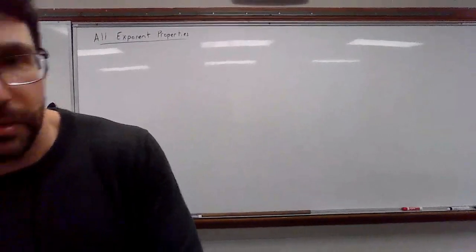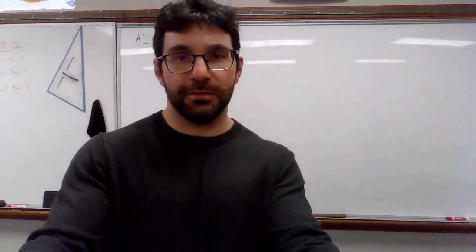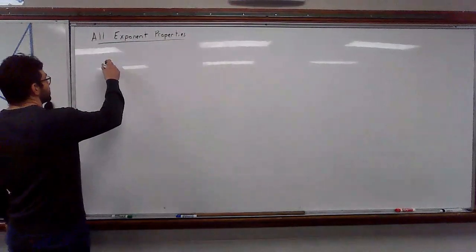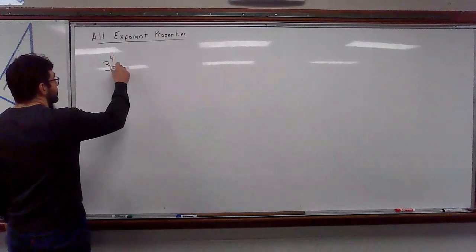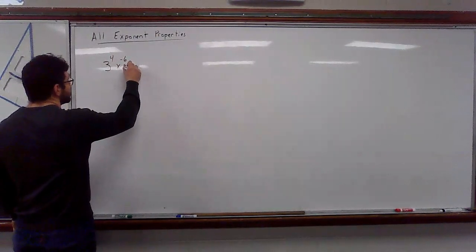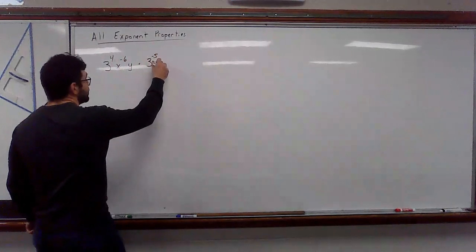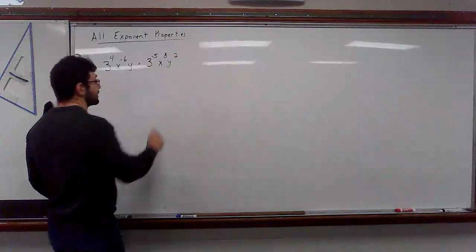Let's try. I don't like it. Okay, we'll try that. Here we go. So if I've got something like 3 to the fourth, x to the negative sixth, y times 3 to the negative fifth, x to the eighth, y to the second.